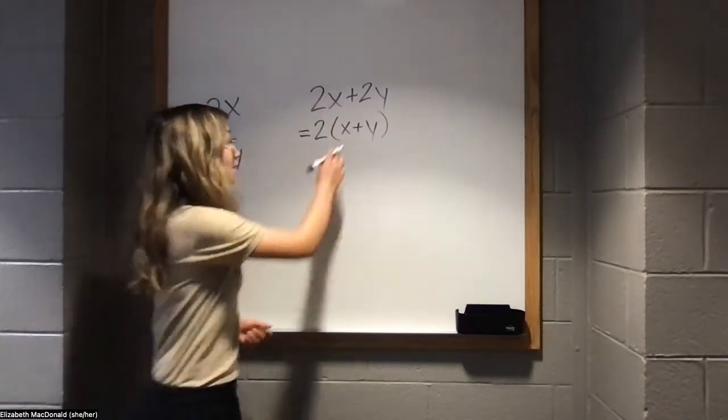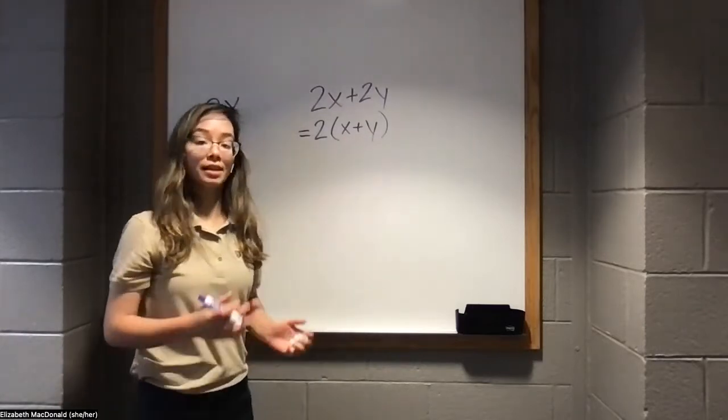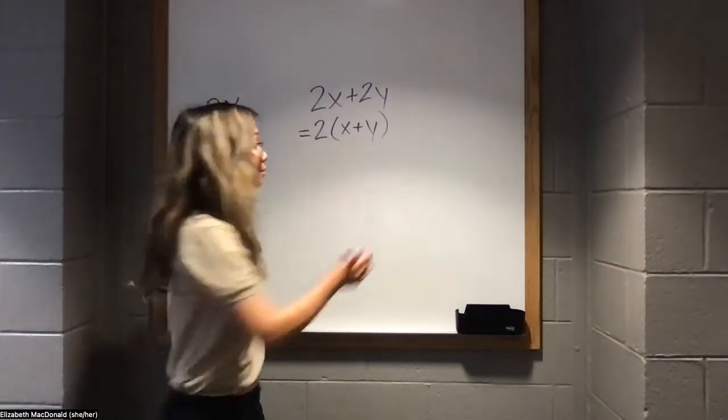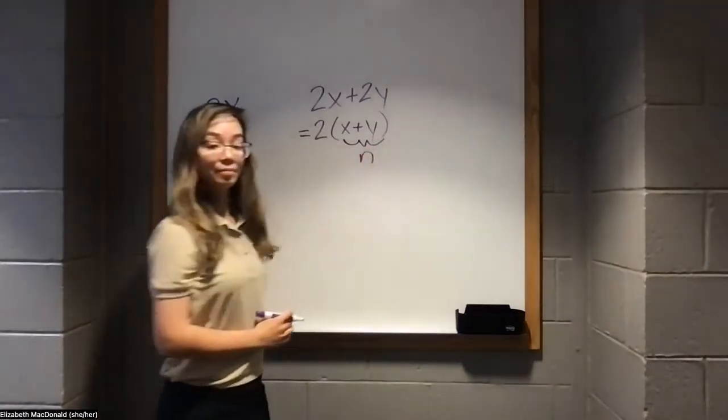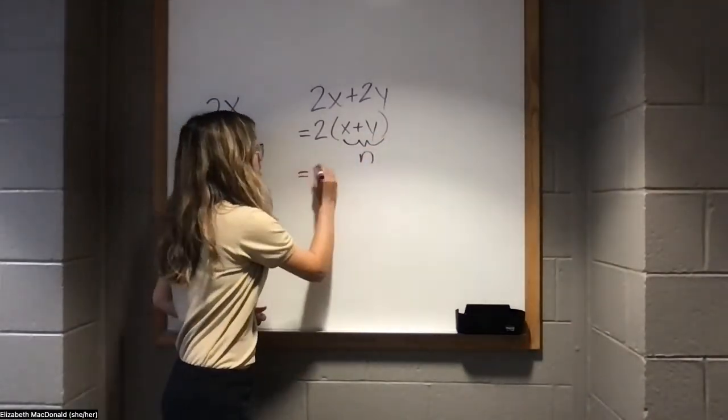Now, we can rewrite x and y as anything we want, because it just represents a single number. I'm going to call it n. So, now we have 2n.